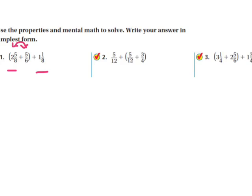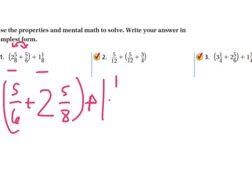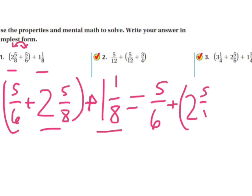I have five sixths plus two and five eighths in parentheses, plus one and one eighth. Now my eighths are next to each other, but these first two terms are still in parentheses. So I have to move the parentheses, because whatever is in the parentheses is what I do first. So now I'm going to change it to five sixths plus two and five eighths plus one and one eighth. So now I have my eighths together.